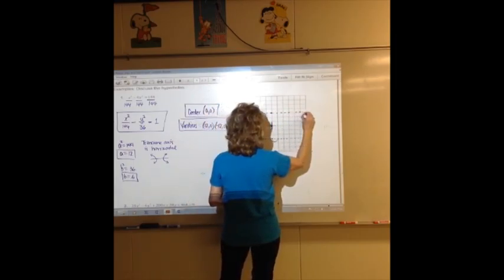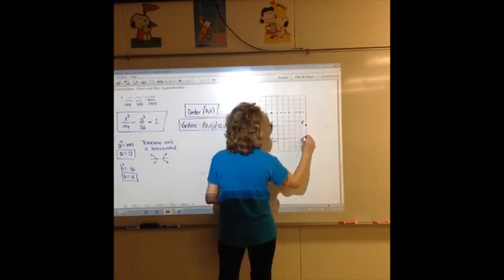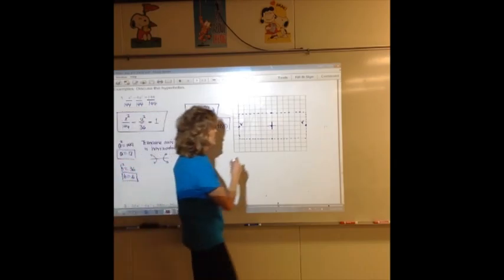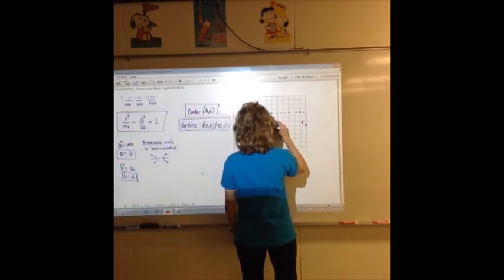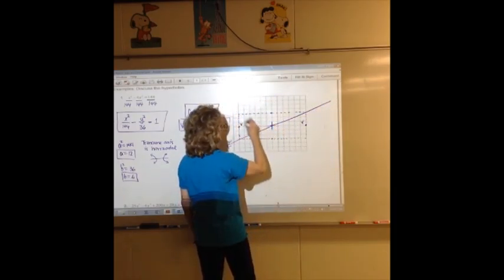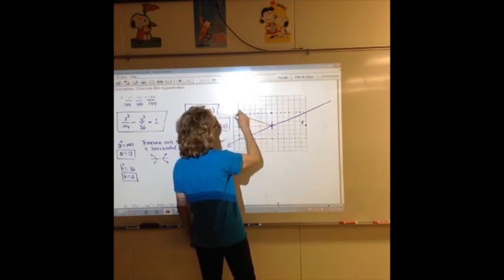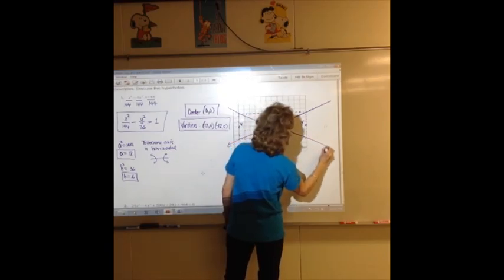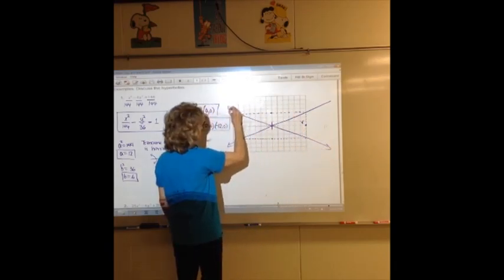And then, after you have the rectangle drawn, draw the diagonal, and those are the asymptotes. So here's one asymptote, and here's the other asymptote. The diagonal of the rectangle gives you the asymptote.